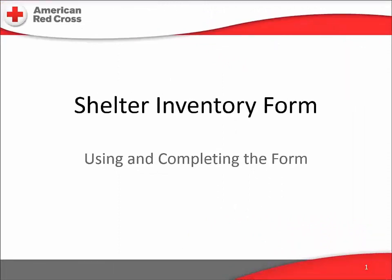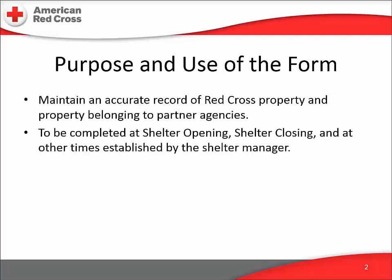This video is part of a series intended to give an overview of the forms used by the American Red Cross in our shelter operations. The shelter inventory form is used to provide a snapshot of all Red Cross and external partner equipment and material physically at the shelter. The Red Cross deploys hundreds of thousands of dollars in equipment and supplies to support a major disaster operation. Keeping track of everything is not only good management — it can represent a major financial saving to the organization. If we don't have to buy a replacement item, we save the money.